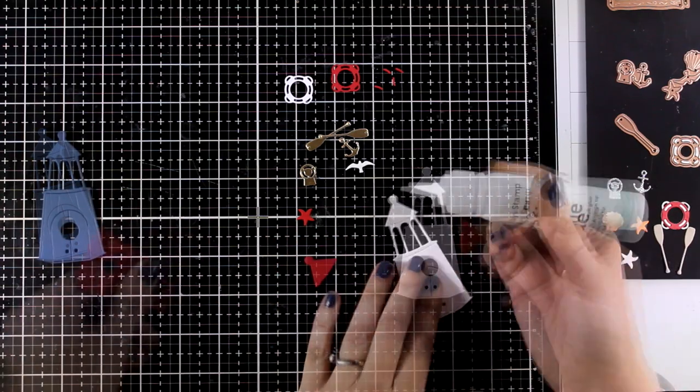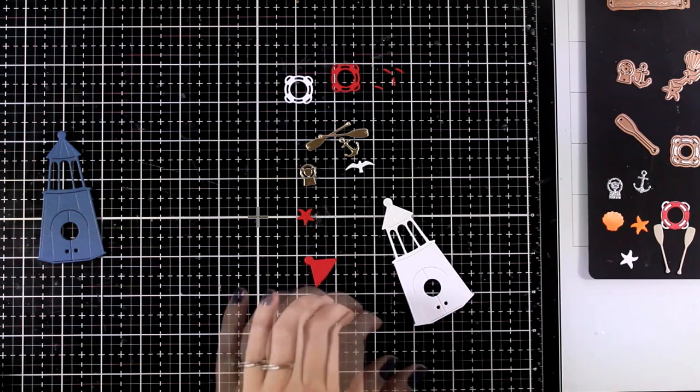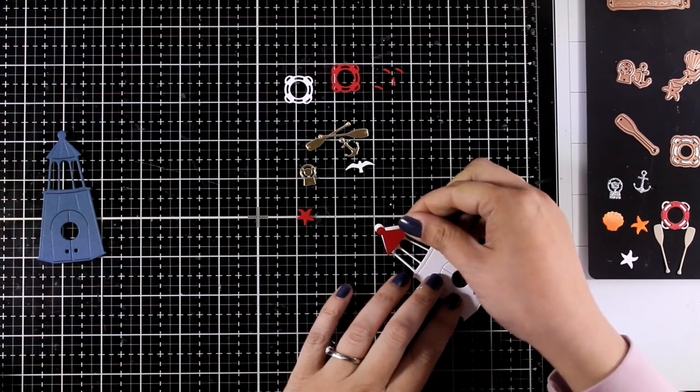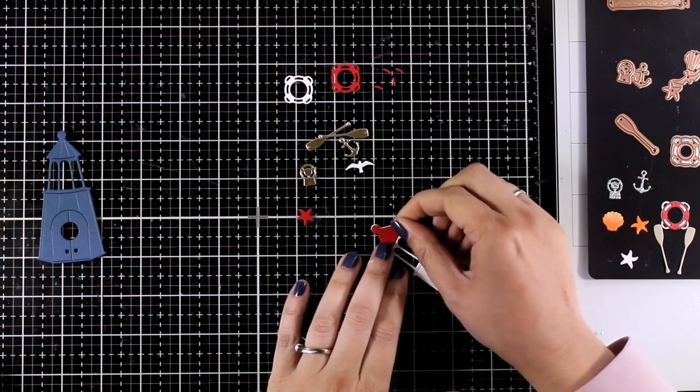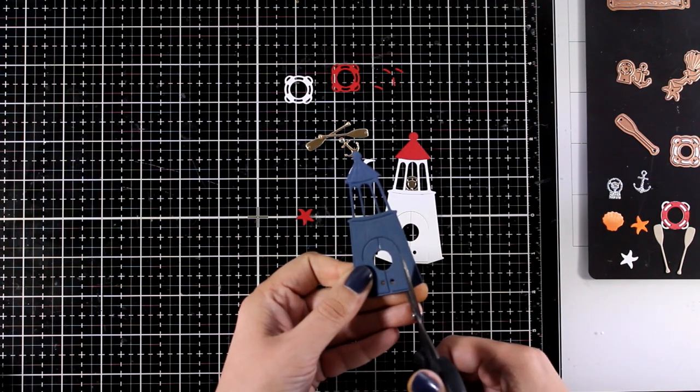One of my go-to recipes when it comes to creating nautical cards is to always use red, blue, white and a touch of gold. If you somehow can add stripes on this design it's going to make it look even more nautical.